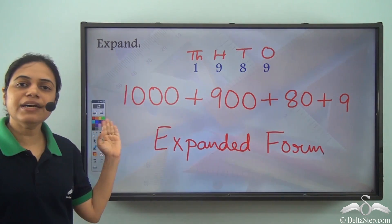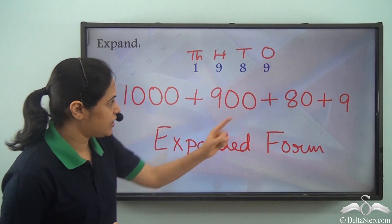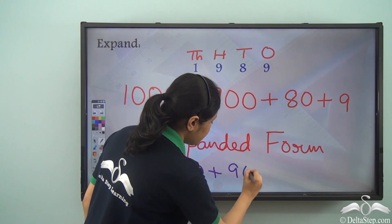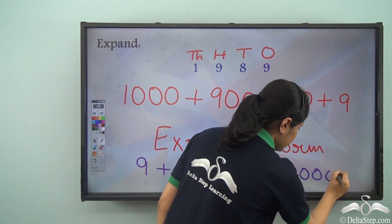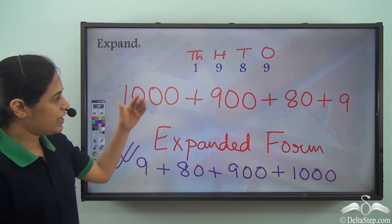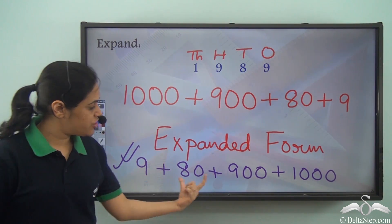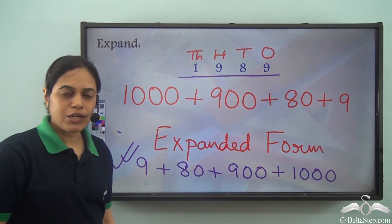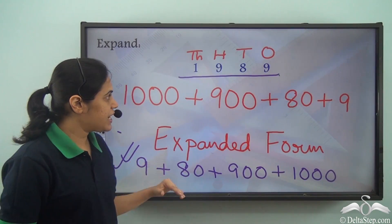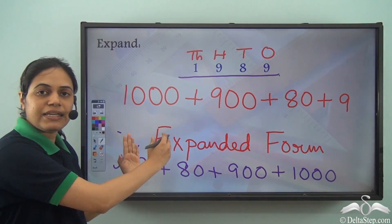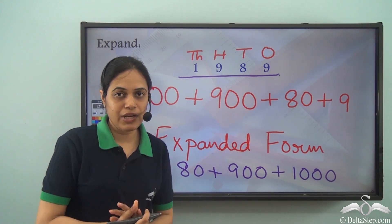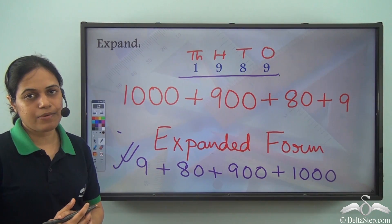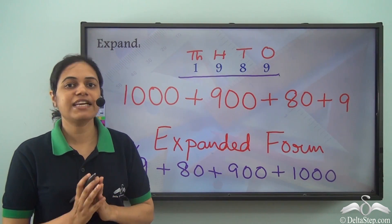Note: we can also write it the other way round — it is all the same. So I could also have written it as nine plus eighty plus nine hundred plus one thousand. Even this is correct; we can write it in whichever order we want. We are just adding the place values of different digits. We are actually breaking this given number into ones, tens, hundreds, and thousands. So just by looking at it, I can say there are nine ones, eight tens, nine hundreds, and one thousand in this number. This is why we write a number in the expanded form.